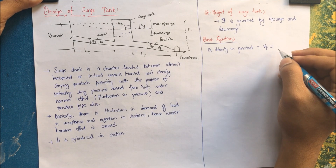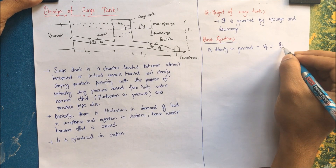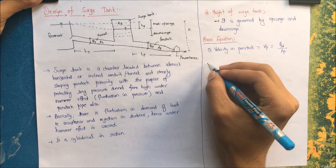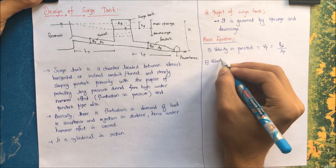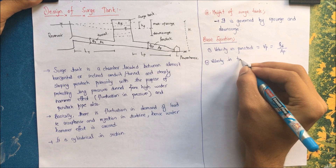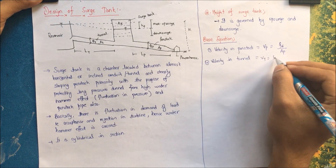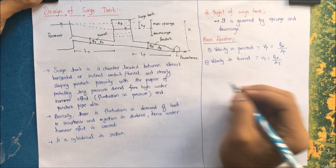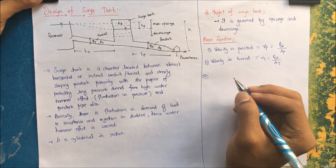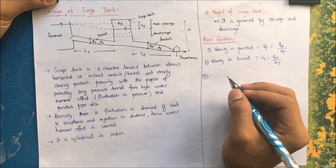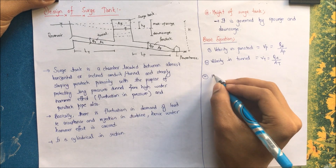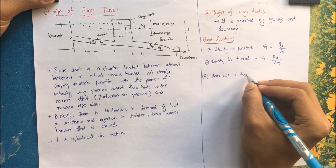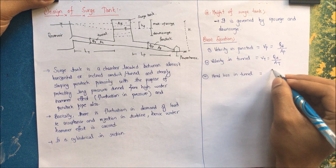Velocity in penstock: Vp = Qd / Ap, where Qd is the design discharge in penstock and Ap is the area of penstock. Velocity in tunnel: Vt = Qd / At, that is the design discharge divided by the area of tunnel.